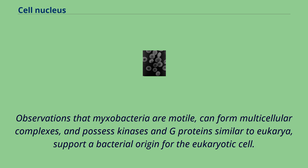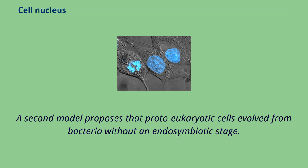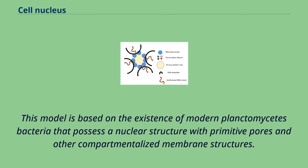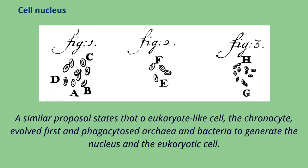A second model proposes that proto-eukaryotic cells evolved from bacteria without an endosymbiotic stage. This model is based on the existence of modern planctomycetes bacteria that possess a nuclear structure with primitive pores and other compartmentalized membrane structures. A similar proposal states that a eukaryote-like cell, the chronocyte, evolved first and phagocytosed archaea and bacteria to generate the nucleus and the eukaryotic cell.